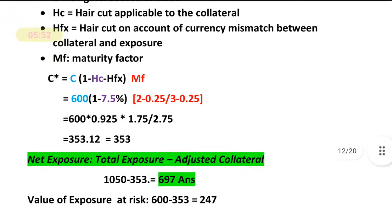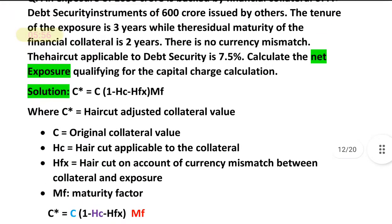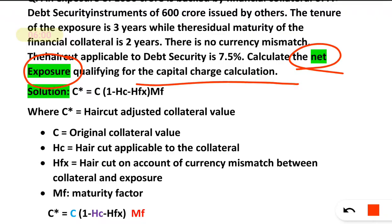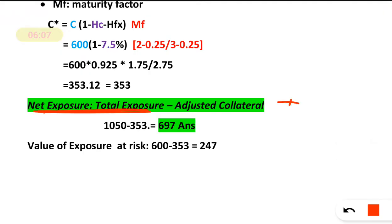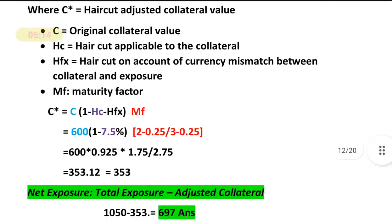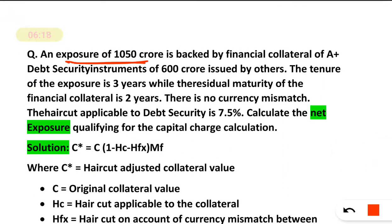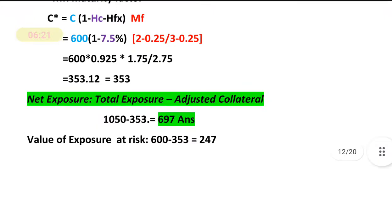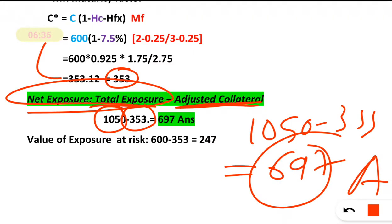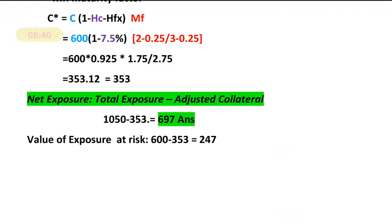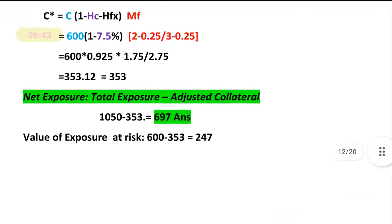The adjusted collateral value C* is approximately 353 crore. Now, net exposure = total exposure − adjusted collateral value. Total exposure is 1050 crore. So net exposure = 1050 − 353 = 697 crore. This is the net exposure qualifying for the capital charge calculation.